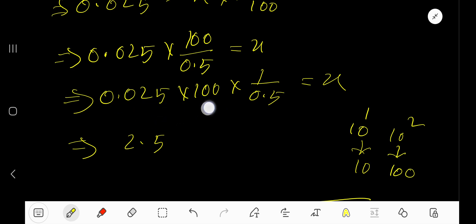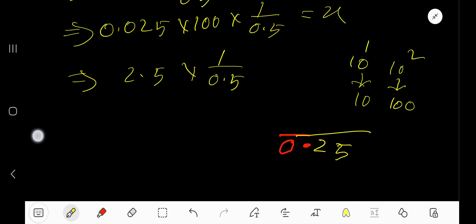2.5 times 100 times 1 by 0.5. Okay, now equal to x. So we are getting 2.5 divided by 0.5 equal to x.